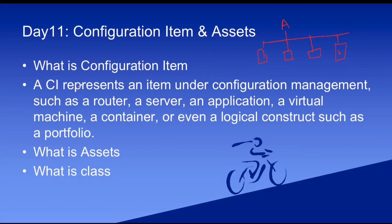If you see the definition, it simply says that a CI represents an item under configuration management such as router, server, application, virtual machine, container, or even a logical construct such as a portfolio. So anything which is used in your organization, we call a configuration item.